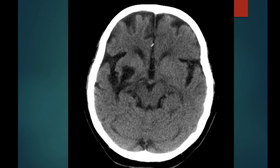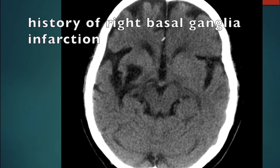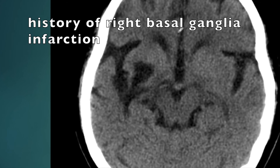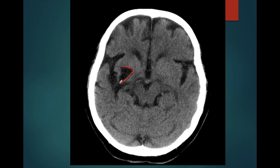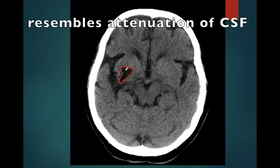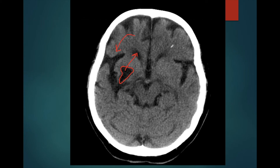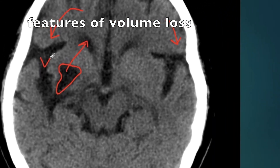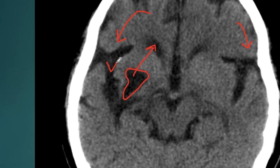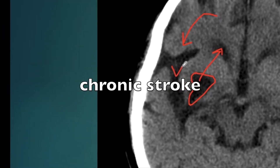In another case of a patient who previously presented with right basal ganglia infarction, the chronic changes are a hypodense area in the right basal ganglia that resembles the attenuation of CSF. Also, the adjacent sylvian fissure is prominent. Comparing the right sylvian fissure with the left sylvian fissure, the right sylvian fissure is quite prominent. These are all features of volume loss, and these features of volume loss are consistent with chronic stroke.